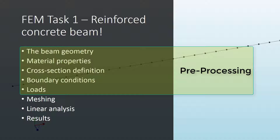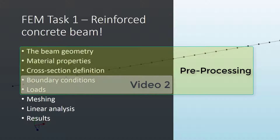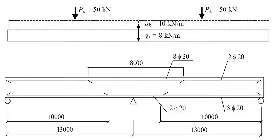We can start now with the next video. In the first video we saw the description of the beam geometry, the creation of the different material properties and cross sections, and now it's time to work with the conditions on the geometry — the boundary conditions, which are supports, and then the loading conditions.